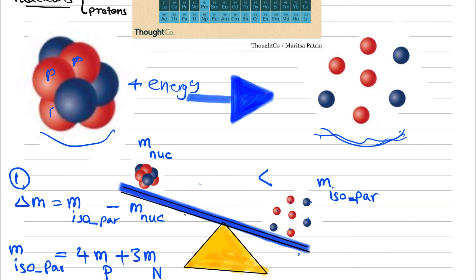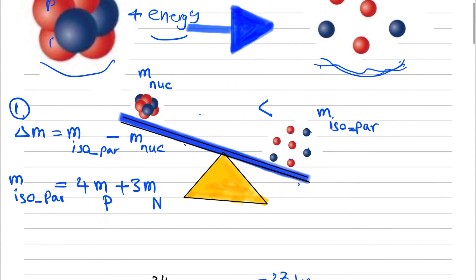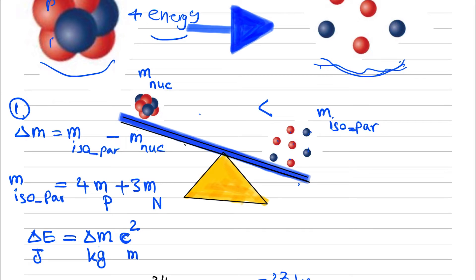This energy that we applied can be connected to mass through the Einstein mass-energy equation: Energy equals mass defect multiplied by the speed of light squared. The unit of this energy is joules, the unit of mass defect is kilograms, and the unit of light speed is meters per second.